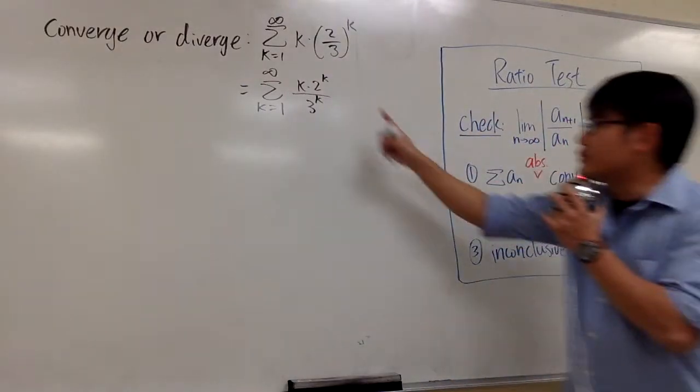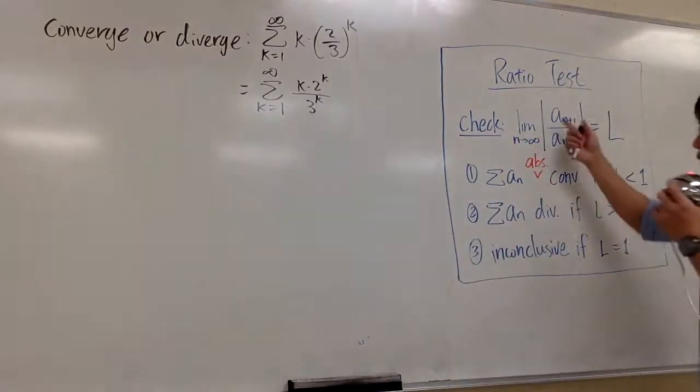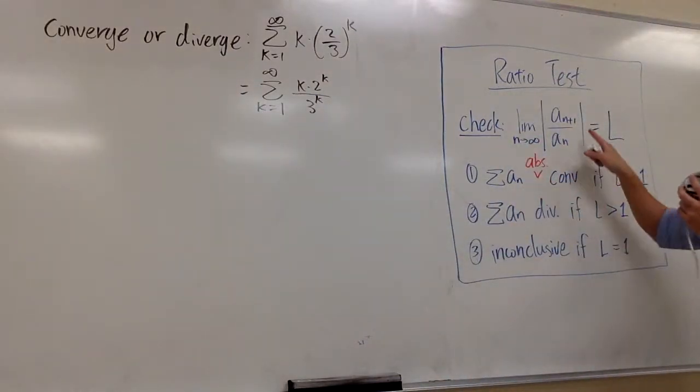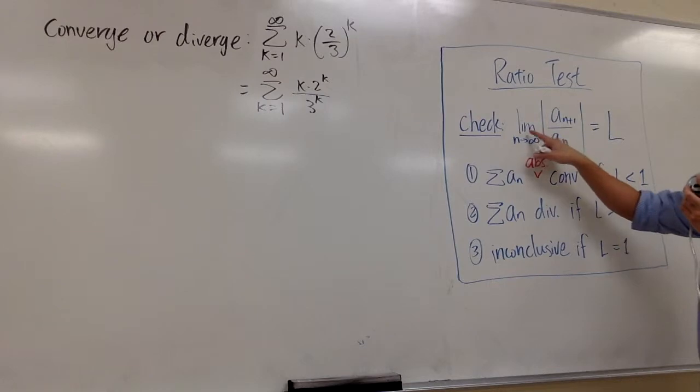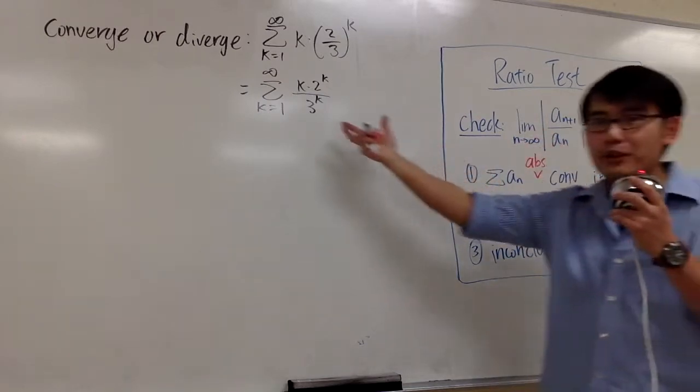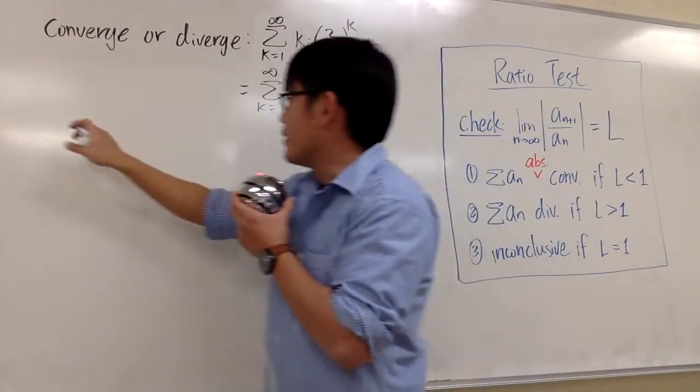Alright, so this right here will be my a_k expression, but then n and k are the same. To use the ratio test, I have to check the limit as k goes to infinity. Alright, let's go ahead and do that.